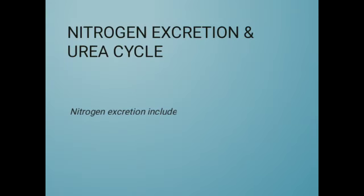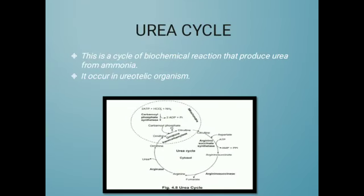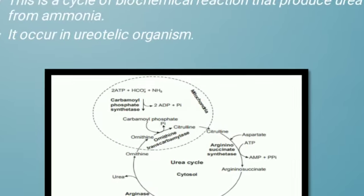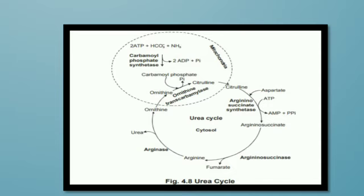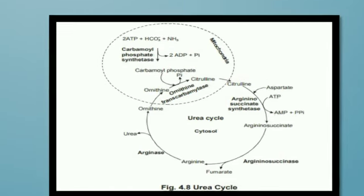Next is nitrogen excretion and the urea cycle. Nitrogen excretion includes ammonia, urea, and uric acids. The urea cycle is the cycle of biochemical reactions that produces urea from ammonia; it occurs in ureotelic organisms. In the mitochondria, bicarbonate plus ammonia and ATP, in the presence of enzyme carbamoyl phosphate synthetase, form carbamoyl phosphate, which converts into citrulline. Citrulline then forms argininosuccinate, which forms fumarate or arginine; arginine forms urea and ornithine, and ornithine regenerates citrulline to continue the cycle.